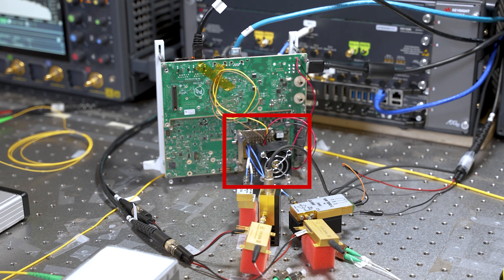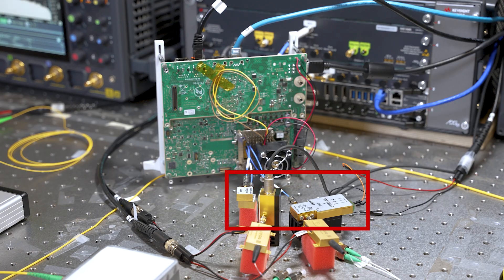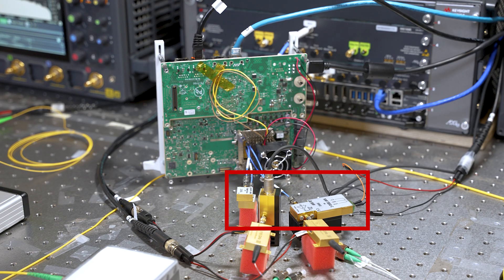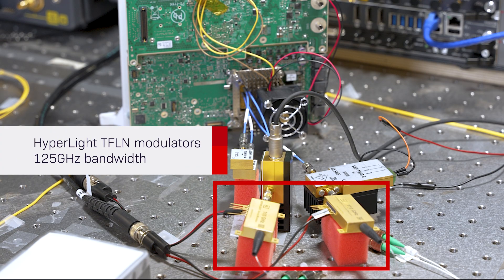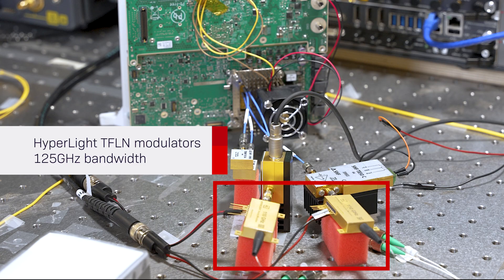This signal exits the card and is amplified by two commercially available RF amplifiers. These amplifiers drive two thin-film lithium niobate modulators provided by HyperLight, which are fully packaged and feature an electro-optic bandwidth larger than 125 gigahertz.